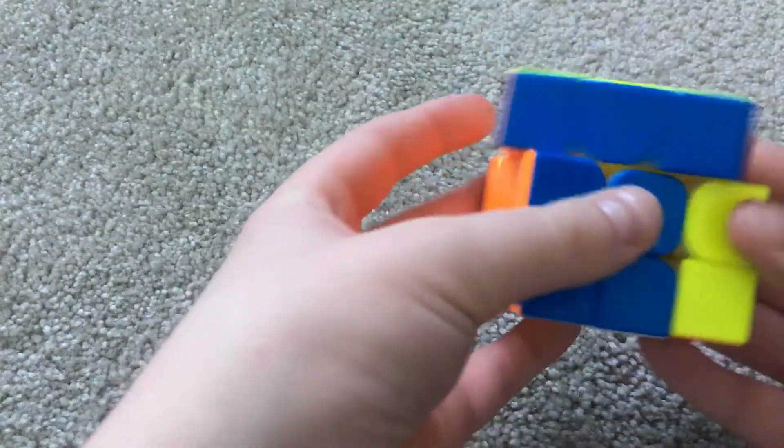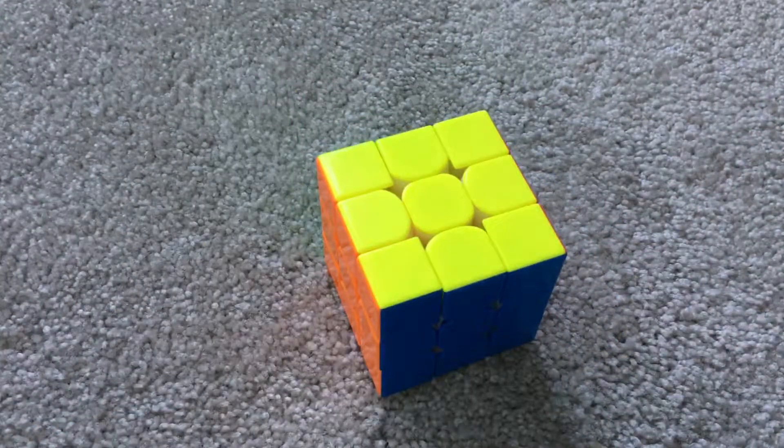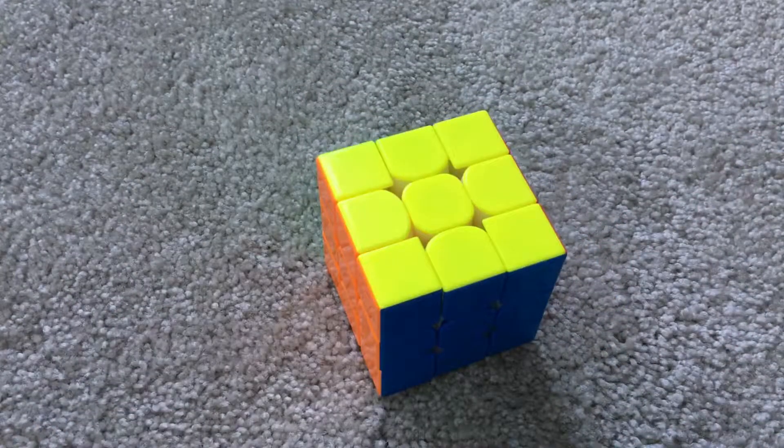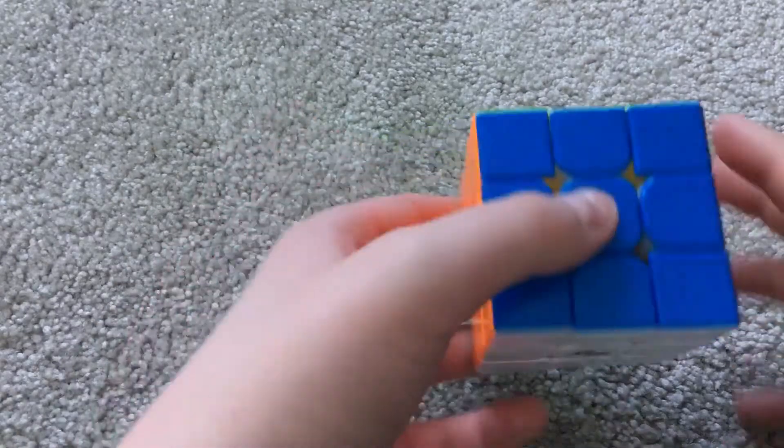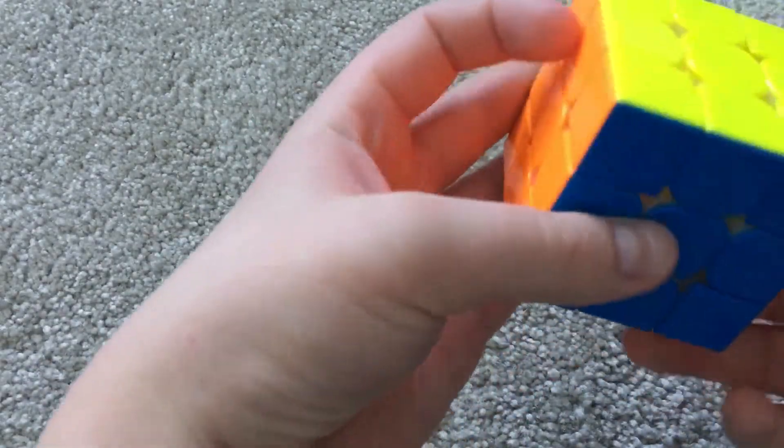But one thing I do like about this cube is that it has the white insides. It kind of makes it have just a little bit of a different look that makes it just look a little bit extra cool. It just makes it seem a little fancier. I just like it like that.